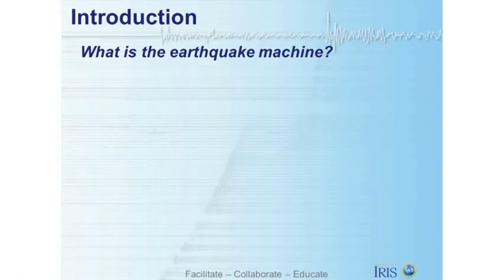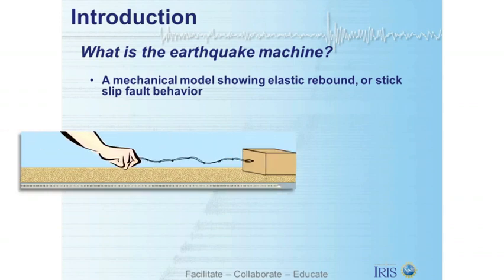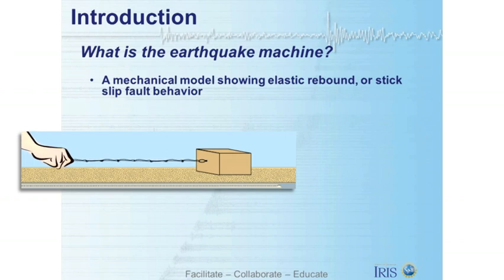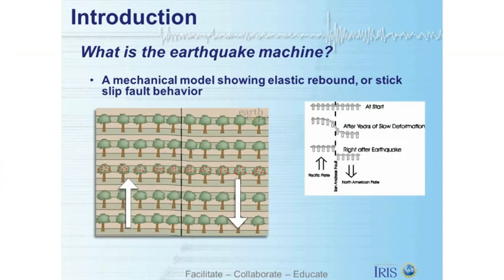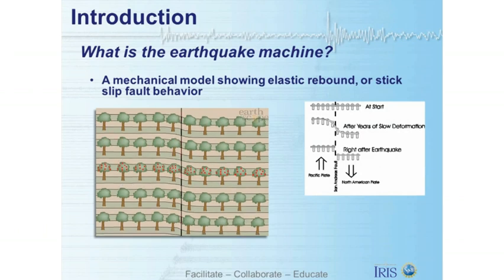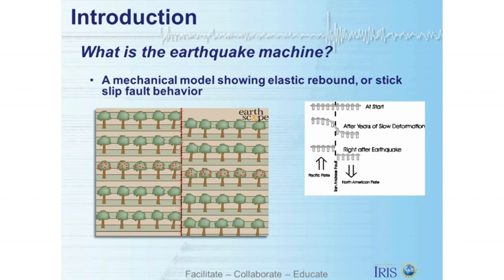So what is the earthquake machine? The earthquake machine is a mechanical model showing elastic rebound, or stick-slip fault behavior. Stick-slip refers to the fast movement that occurs between two sides of a fault when those two sides become unstuck. The rock becomes distorted or bent, but it holds its position until the earthquake occurs. When the rock snaps back into its original position, it's called elastic rebound. Stick-slip displacement on a fault radiates energy in the form of seismic waves, creating what we commonly call an earthquake.